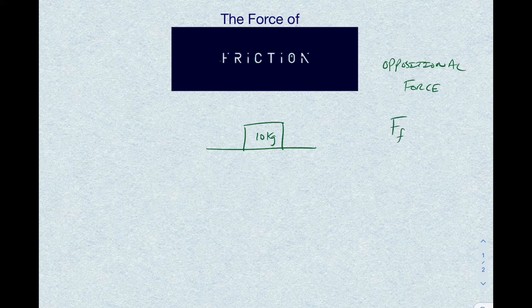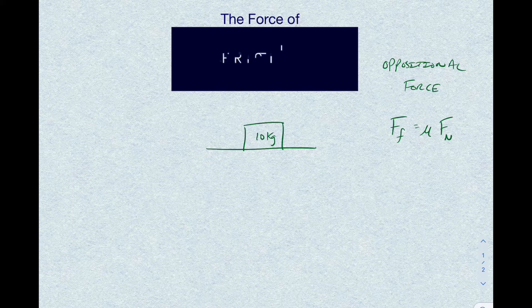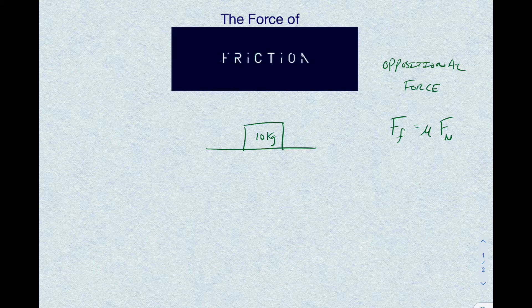Friction has an equation: the force of friction (big F, little f) is equal to mu — a Greek letter — times the normal force. This is why we've been spending time on the normal force: so we can figure out what friction is, because frankly the normal force hasn't mattered to us until this point.